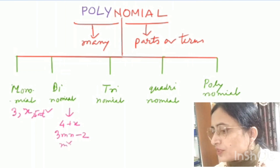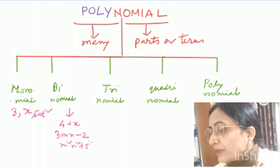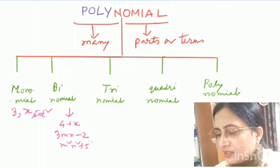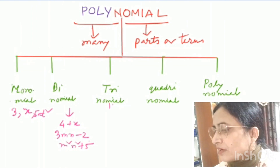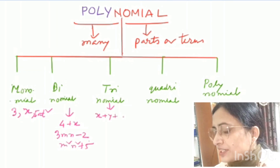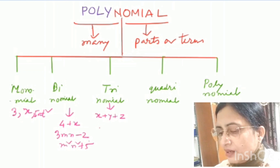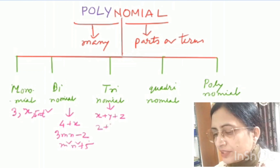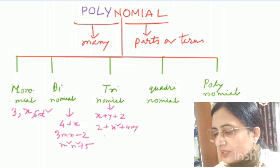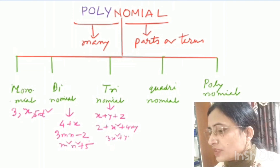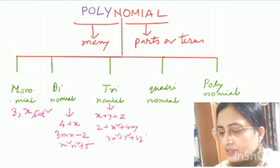In the case of a trinomial, the expression contains three terms. For example, x + y + z contains three terms. Another example is 2 + x² + 4xy, and another is 3x² + y² + 4z². These are all trinomials.